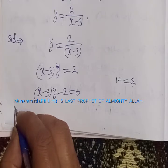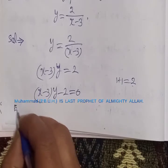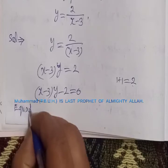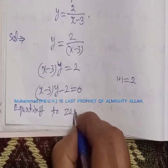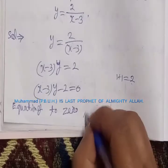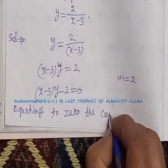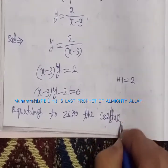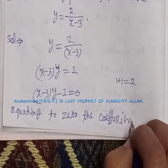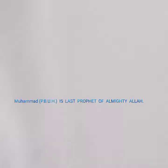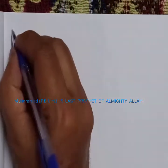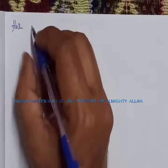To find asymptotes parallel to the axes, we equate to zero the coefficients of the highest power of x and the highest power of y respectively.